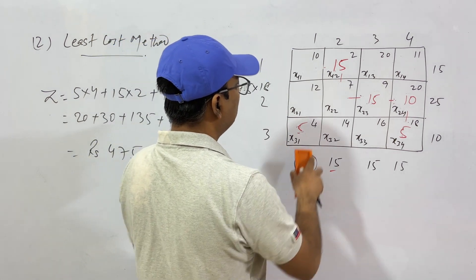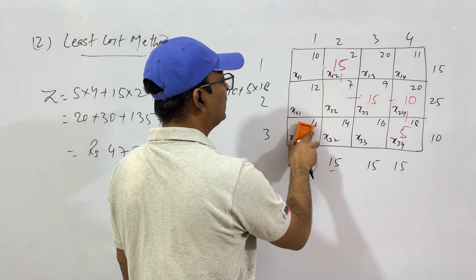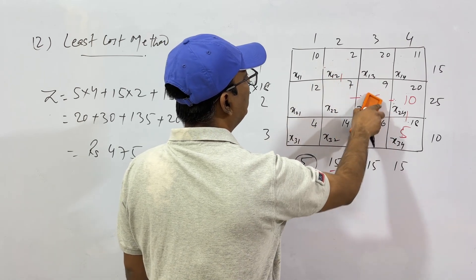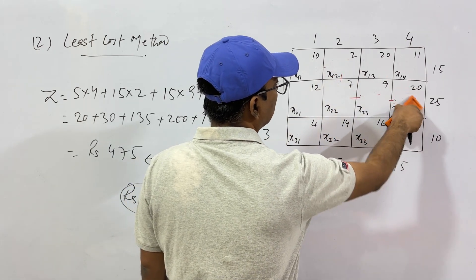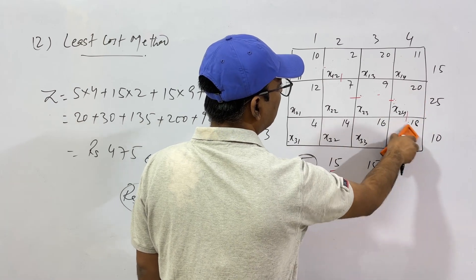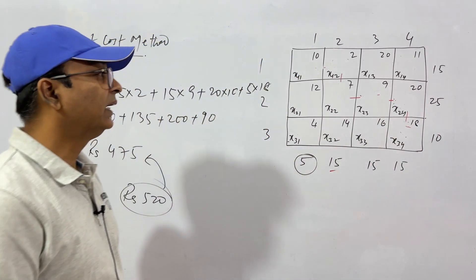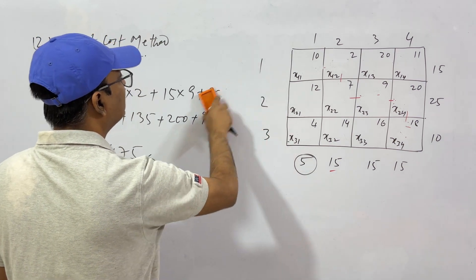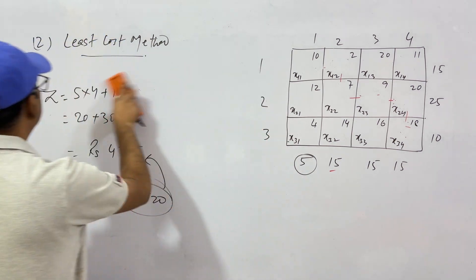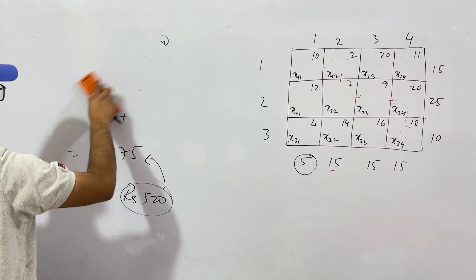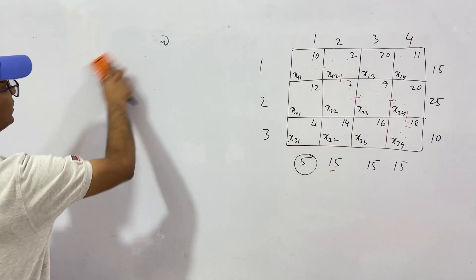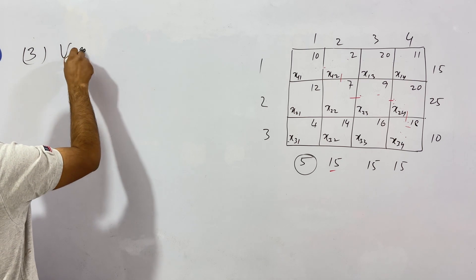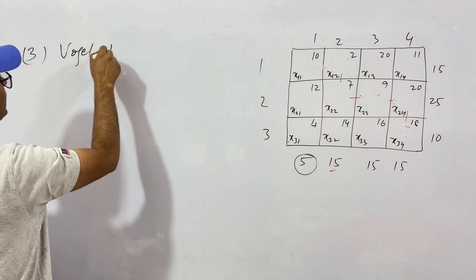Now the third method: the Vogel approximation method. It is a refinement of the least cost method — a bit superior. It will give at least the same result as least cost, if not better. So it is an improvement over the least cost method.